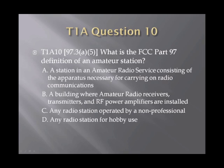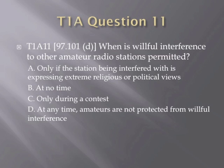Question 10. What is the FCC Part 97 definition of an amateur station? A. A station in an amateur radio service consisting of the apparatus necessary for carrying on radio communications. B. A building where amateur radio receivers, transmitters, and RF power amplifiers are installed. C. Any radio station operated by a non-professional. Or D. Any radio station for hobby use. Question 11. When is willful interference to other amateur radio stations permitted? A. Only if the station being interfered with is expressing extreme religious or political views. B. At no time. C. Only during a contest. Or D. At any time — amateurs are not protected from willful interference.